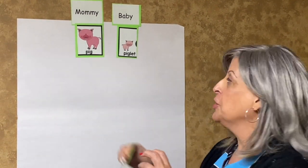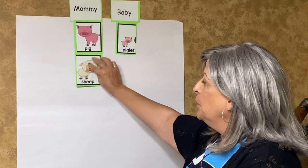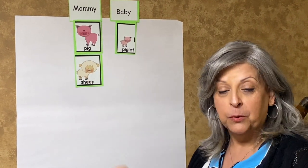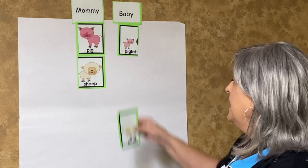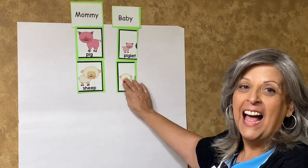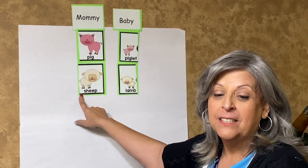How about a sheep? This is the mommy sheep. What do you call the baby sheep? It's a lamb. A lamb is the baby sheep.